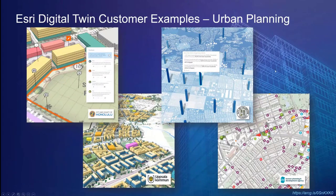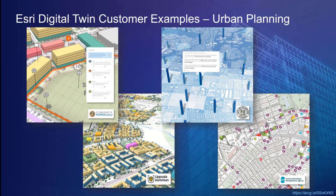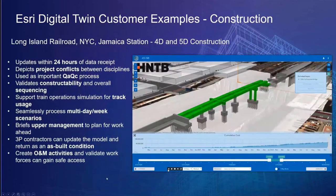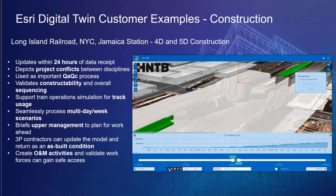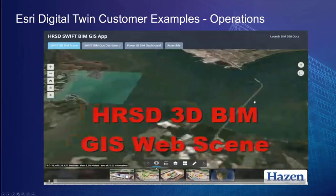For customer examples: we have a product called ArcGIS Urban for urban planning, but even before Urban was released, customers had been using GIS for urban planning for decades. Some customers think of these urban planning tools as digital twins, and they can also bring in reality capture, point clouds, and reality meshes. HNTB independently used our tech to create a 5D construction visualization tool, which they use as a sales tool — they describe it as a version of a digital twin relevant to them.